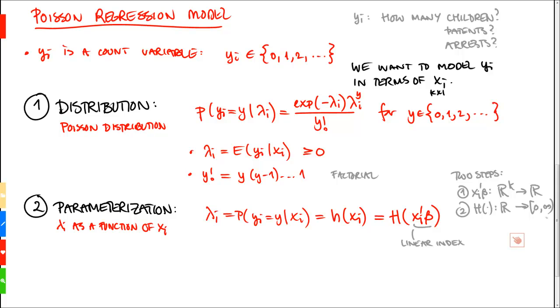So, the only thing we should note here about this function, h of xi prime beta, is that it has to be 0 or positive. Because the parameter lambda i is the expected value of yi given xi, this has to be positive. So, typically, we choose, for example...